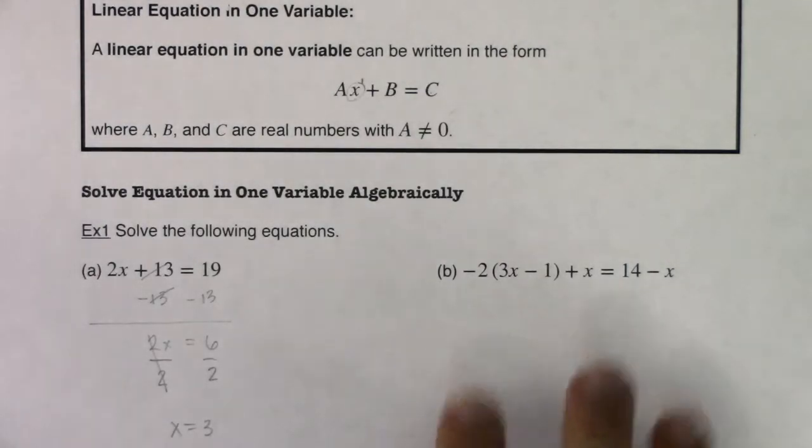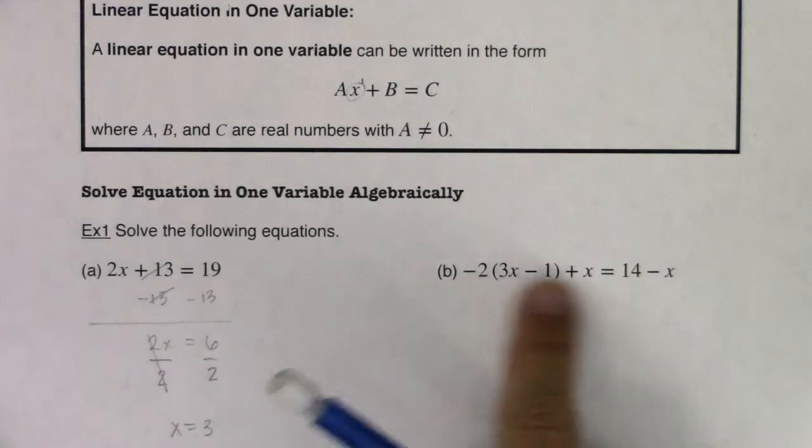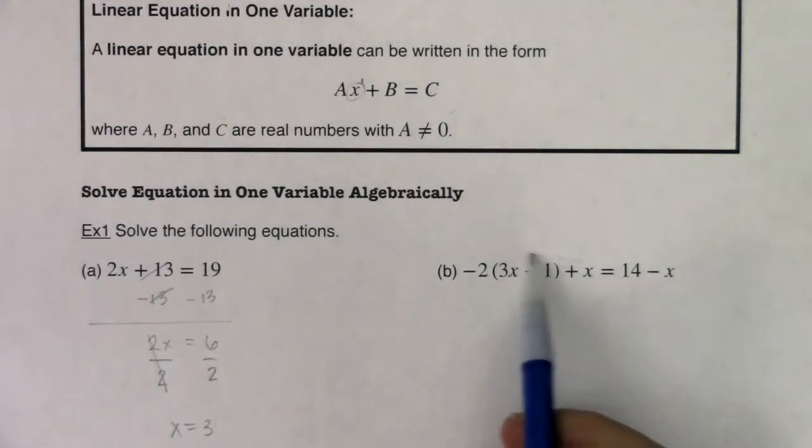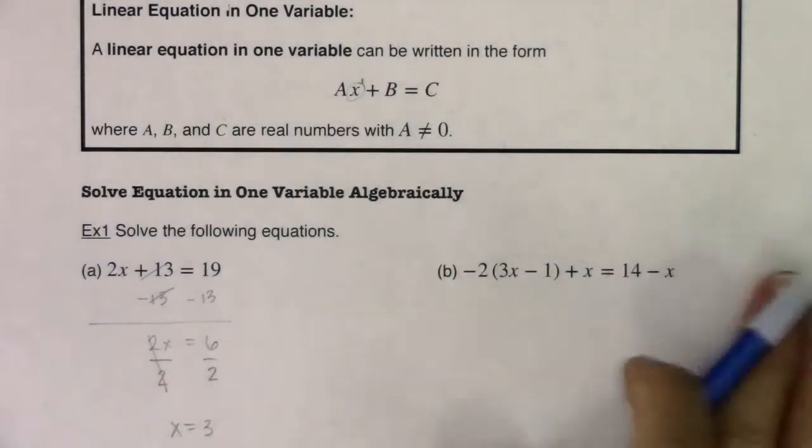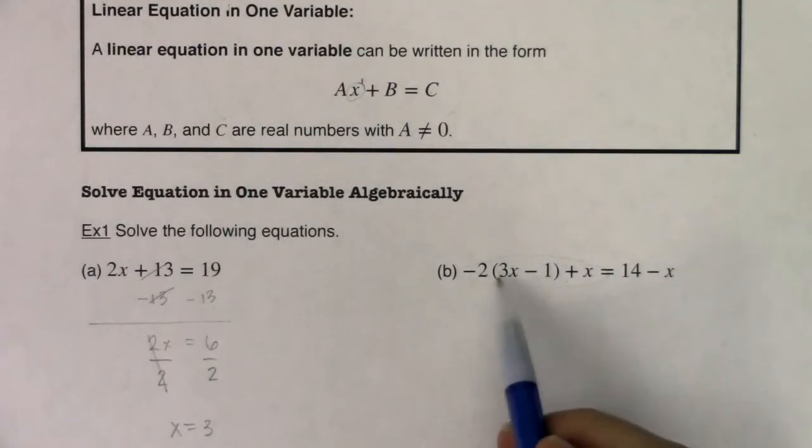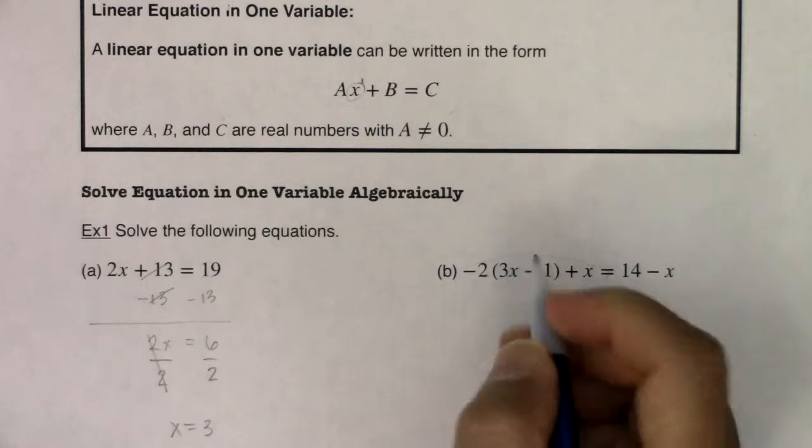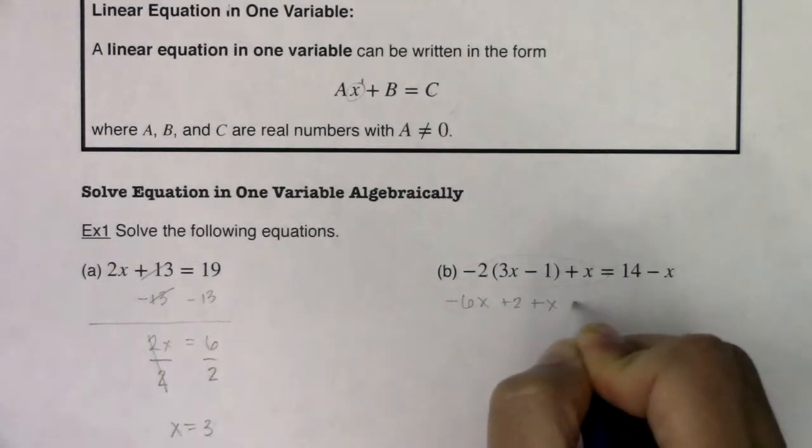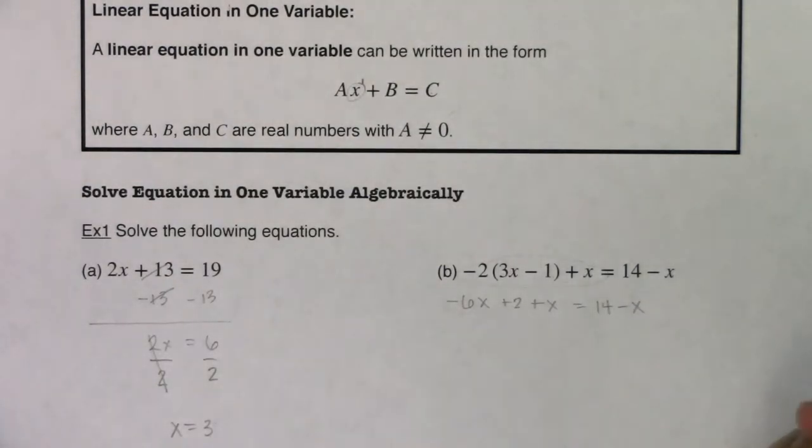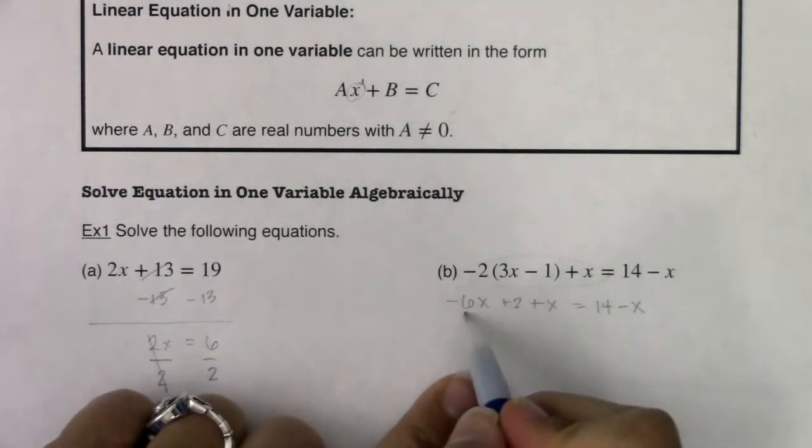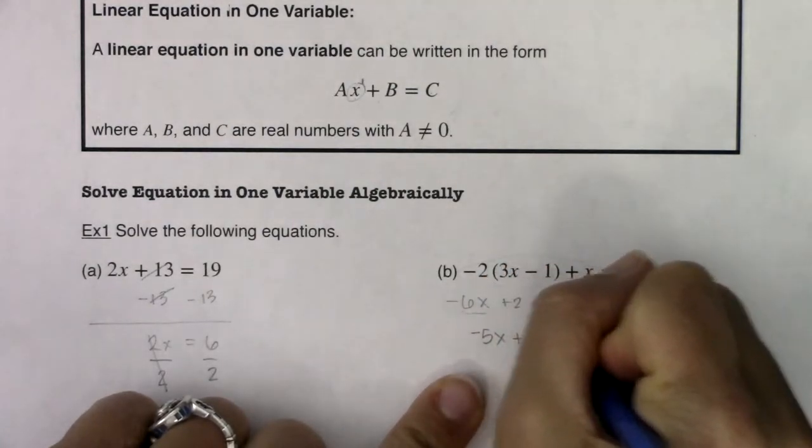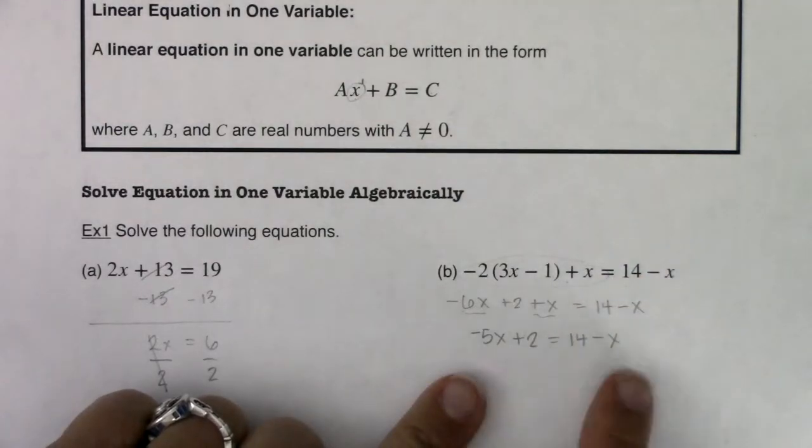Now on part b, I gave you a more complicated equation. If you look on the left side, I have some algebra to do before I start adding and subtracting things to both sides. I want to simplify this side before I start manipulating both sides. I'm going to distribute the -2 to the (3x - 1), being careful to distribute the -2 to the -1. -2 times 3x is -6x. -2 times -1 is +2. I still have +x, and 14 - x on the other side. I can simplify: -6x + x is -5x, plus 2 equals 14 - x. This side is simplified and this side is simplified.